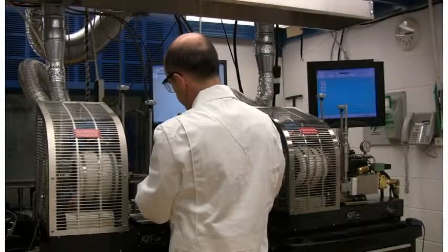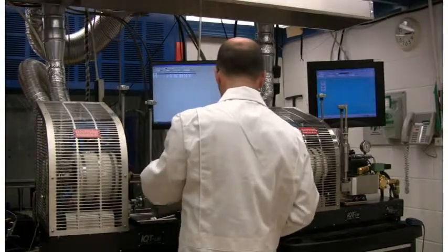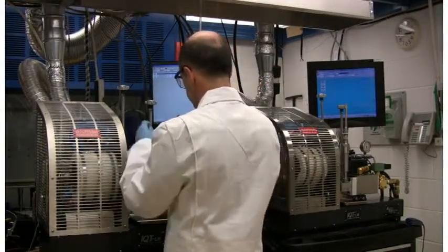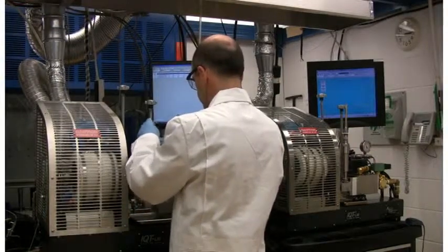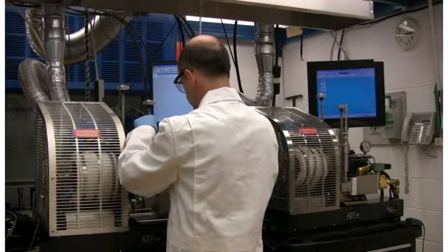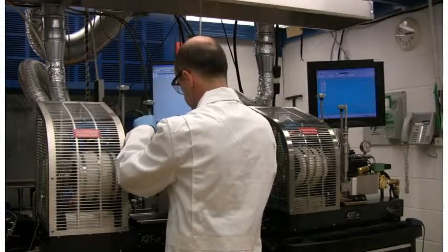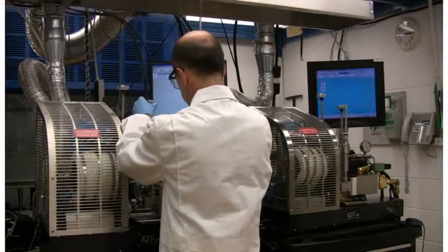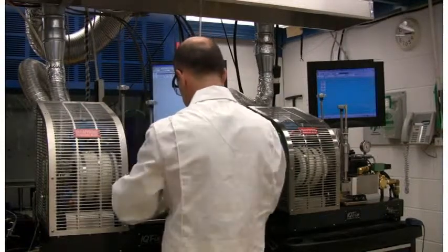When a full IQT test is run, fuel is injected into the combustion chamber 47 times. The first 15 injections allow the IQT to come to a steady operating condition, and the last 32 injections are used to determine the derived cetane number of the sample. The total test time is approximately 17 minutes.